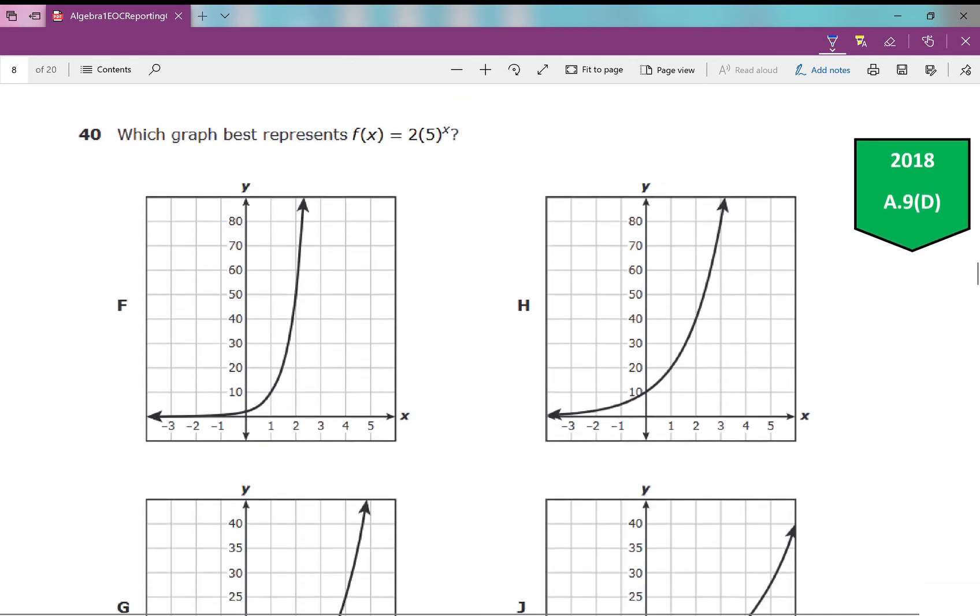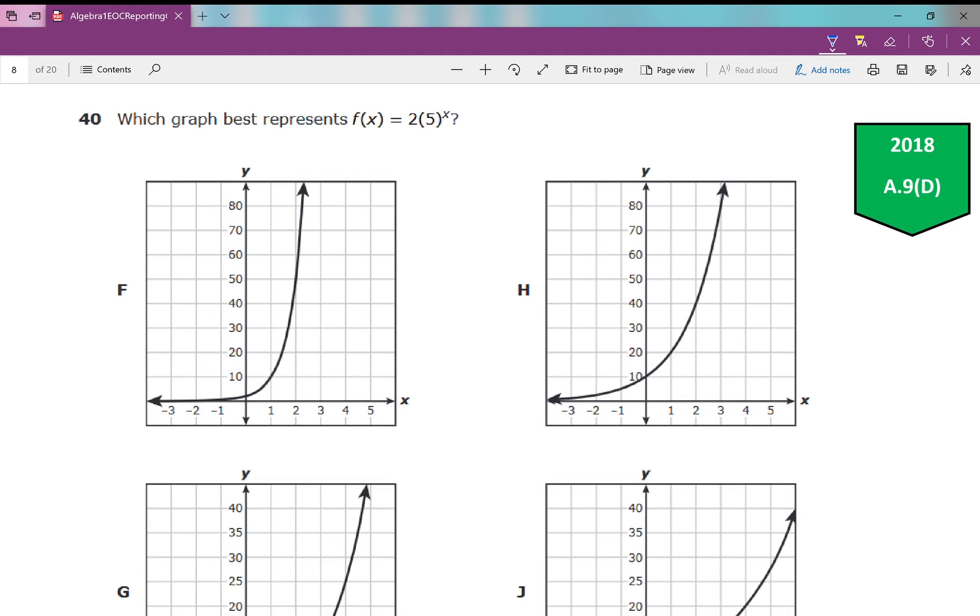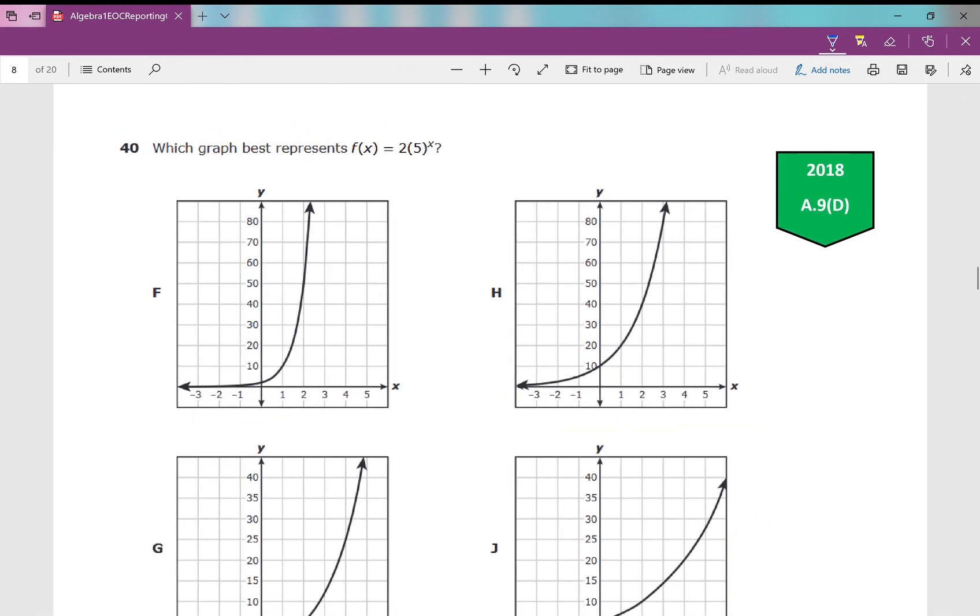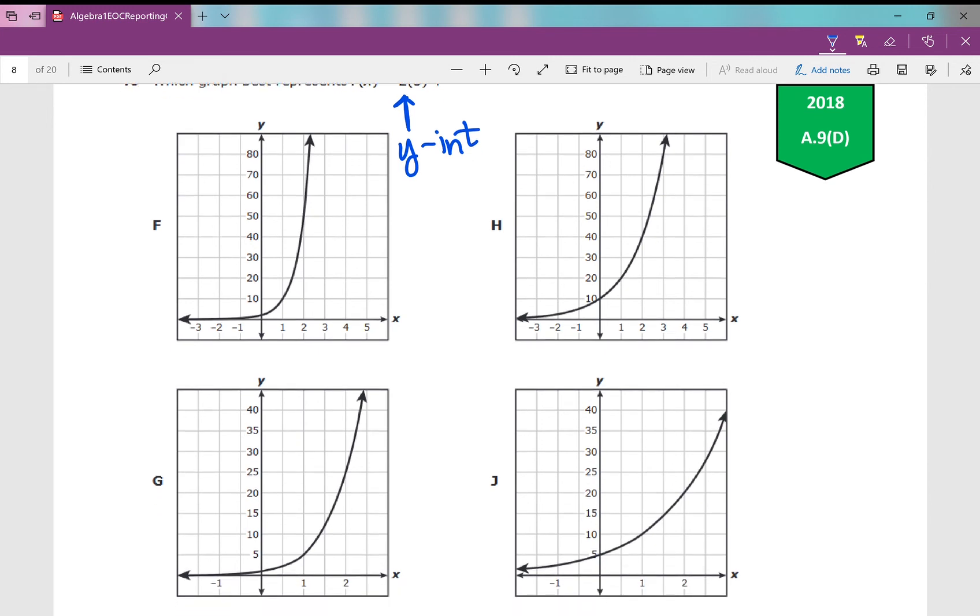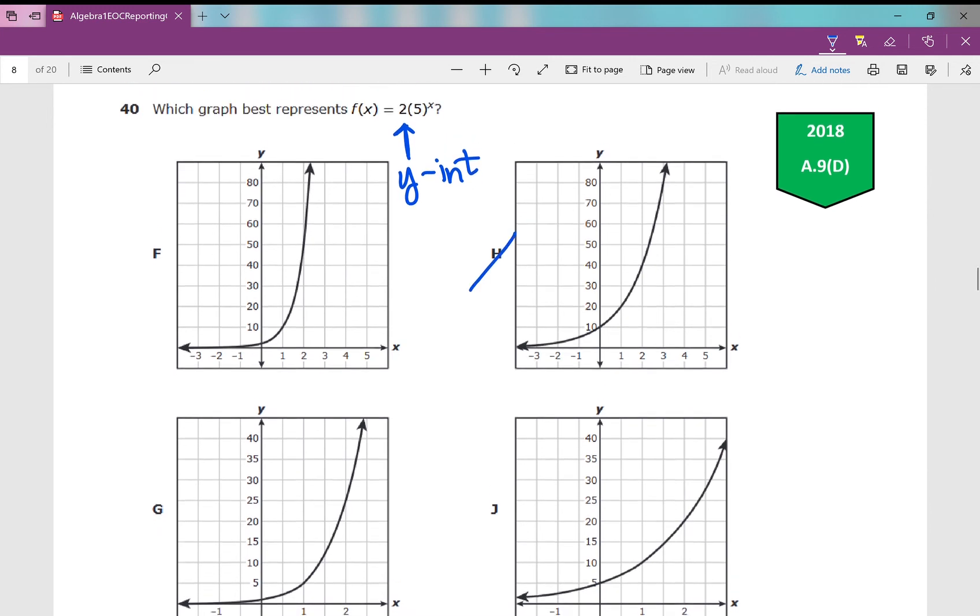Let's move on. Number 40, which graph best represents f of x equals 2 times 5 to the power of x? Graph it on your calculator. Absolutely graph it. Now, if you do know this right here is your initial amount, that's your y-intercept. Could you eliminate any answer choices? Sure, I could eliminate H. That does not have 0, 2 as my y-intercept. Anything else? I can eliminate J. It's not going to be that one. 0, 5 is the y-intercept for that one.